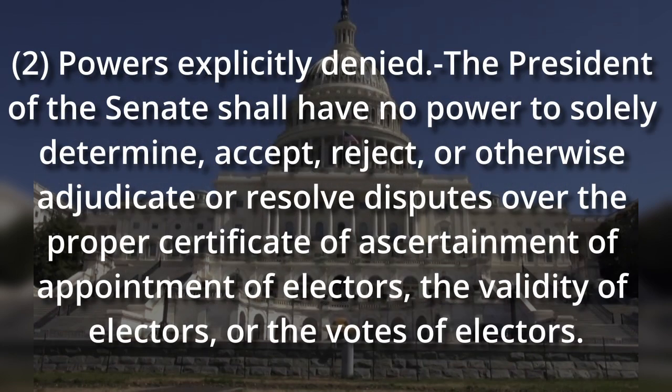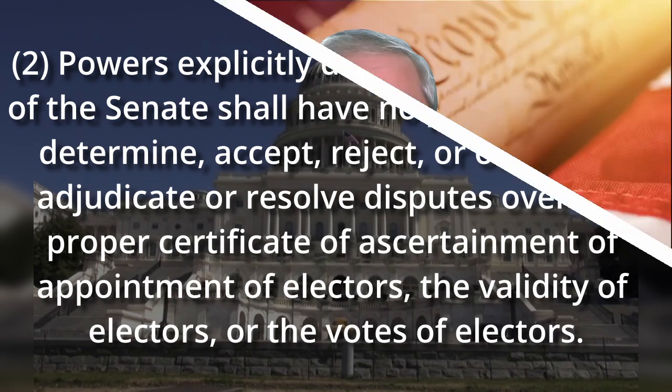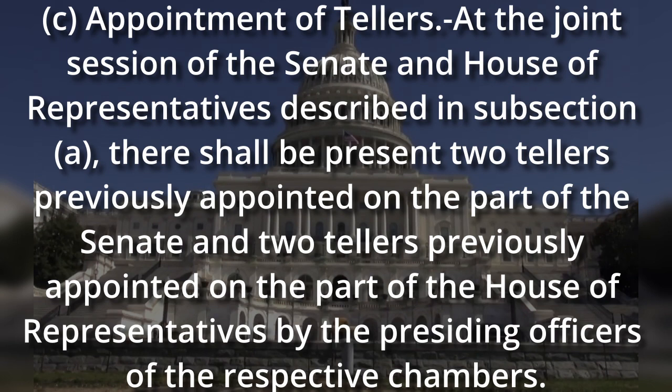The president of the Senate shall have no power to solely determine, accept, reject, or otherwise adjudicate or resolve disputes over the proper certificate of ascertainment of appointments of electors, the validity of electors, or the votes of electors. Sadly, this is where Congress has begun to interfere with the election process. At the joint session, there shall be present two tellers previously appointed on the part of the Senate and two tellers previously appointed on the part of the House of Representatives by the presiding officers of the respective chambers. The Constitution doesn't say how the votes are to be counted — Congress wanted their input on the process.